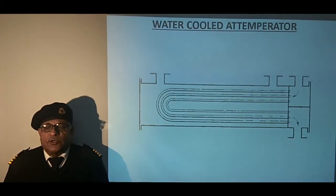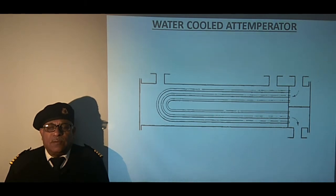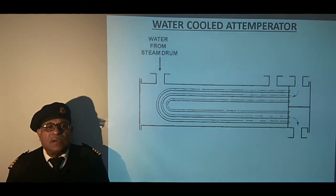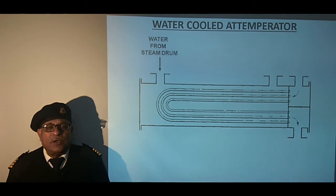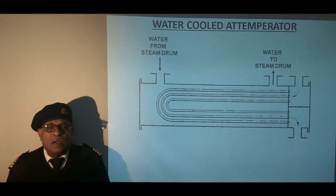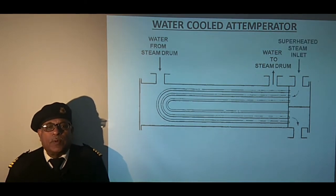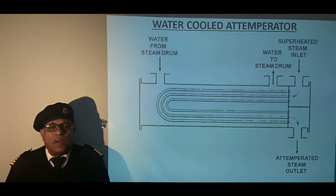This sketch shows an externally arranged water-cooled attemperator. Let us first see the flow of steam and water through it. We can see that water from the steam drum enters the shell of the attemperator. Then from the other connection, it goes back to the steam drum, and the circulation is maintained by the temperature difference. In the header, the superheated steam enters from the top and the tempered steam goes out to the secondary superheater.